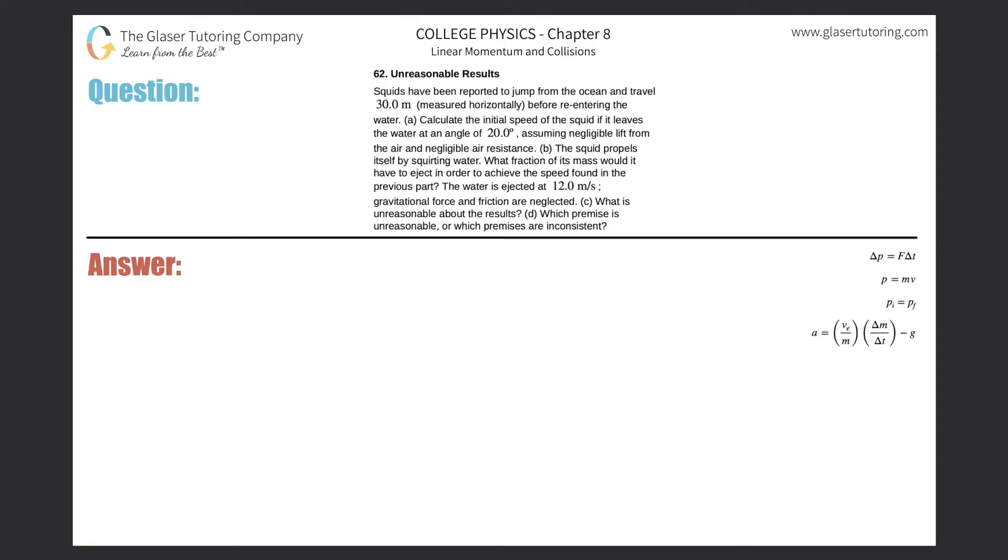Number 62, unreasonable results. Squids have been reported to jump from the ocean and travel 30 meters measured horizontally before re-entering the water. Letter A: calculate the initial speed of the squid if it leaves the water at an angle of 20 degrees, assuming negligible lift from the air and negligible air resistance. Basically we have our little squid, it's going to jump at a particular angle above the horizontal at 20 degrees and it's going to travel horizontally 30 meters.